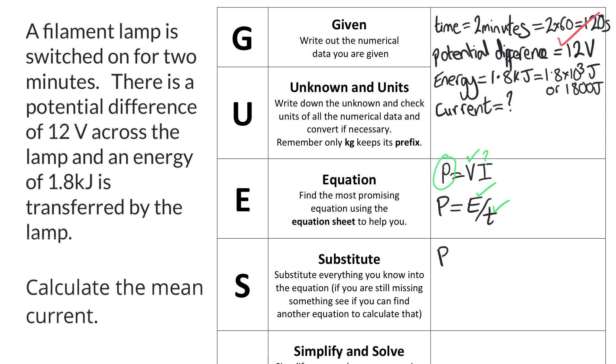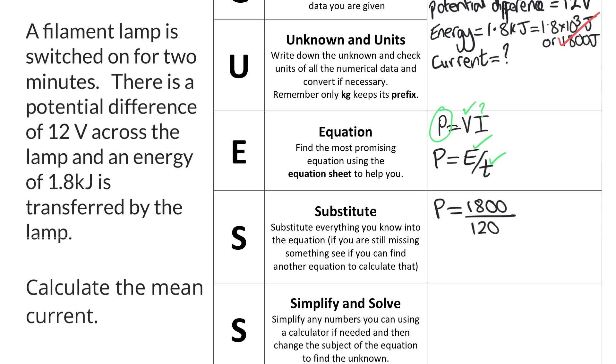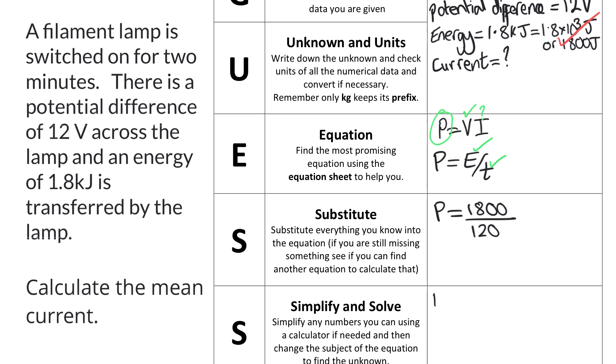So let's substitute into this power equals energy transferred divided by time, and instead of energy I'm going to substitute in my 1800 joules and instead of time I'm going to substitute in 120 seconds. I can now put that into my calculator and get power equals 15 watts. You don't need to write the unit but for correctness I have. The good news is that that substitution and calculating the power as 15 watts will have got me a couple more method marks.